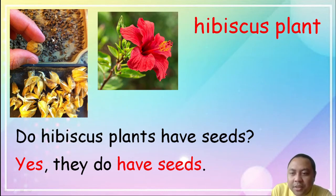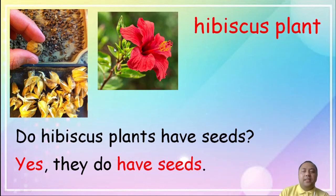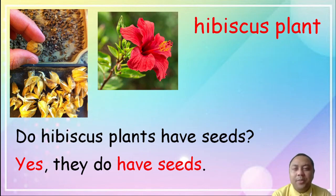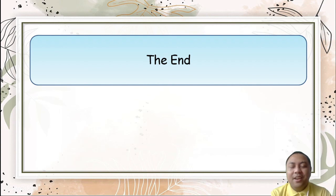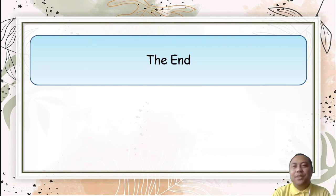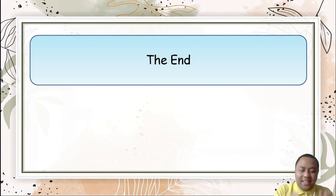So flowering plants have fruits, flowering plants have seeds, and flowering plants also have, of course, a flower. And now that's the end of our video. I hope you learned something new and stay tuned for more videos. Bye bye!